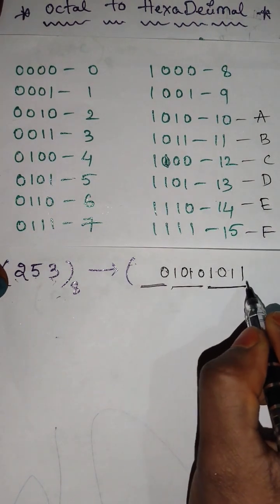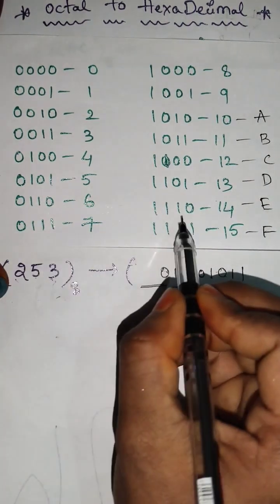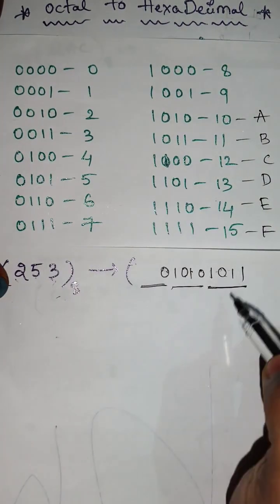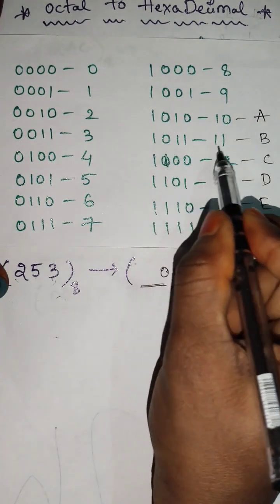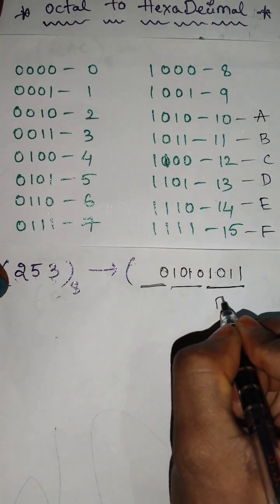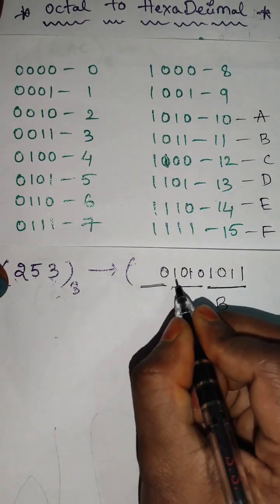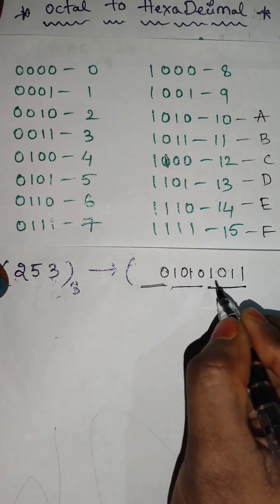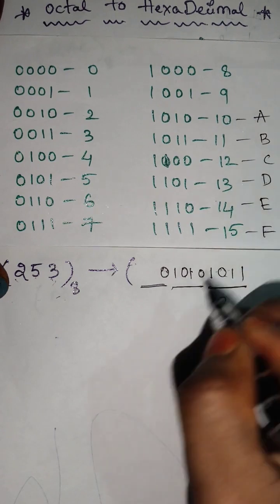1, 0, 1, 1 means 1, 0, 1, 1 — that is 11, which means B. 1, 0, 1, 0 means A.